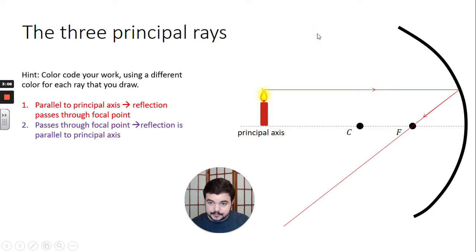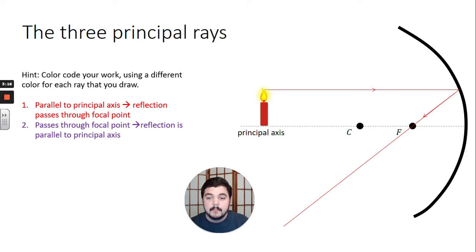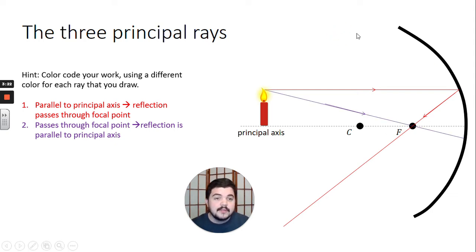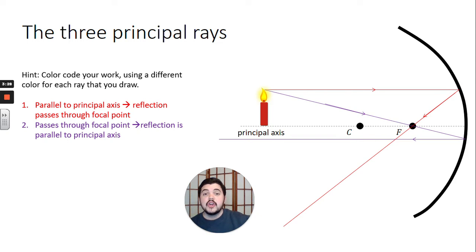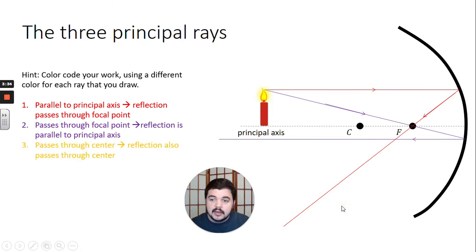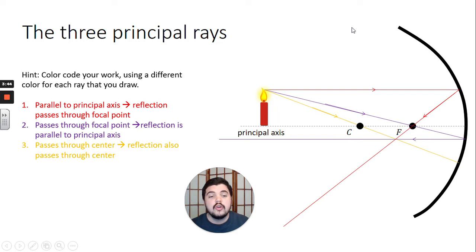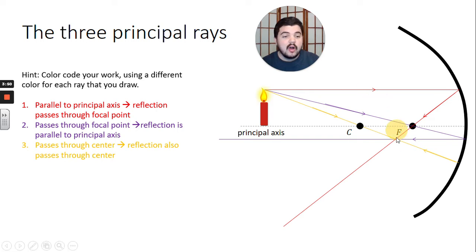Principal ray number two: we can run this geometry in reverse. The light ray that goes through the focal point is going to reflect off of the mirror parallel to the principal axis. I encourage you to use a straight edge — grab a ruler and draw a straight line. Number three: we should draw a light ray that passes through the center of the circle, because that's along the normal line, and since it's along the normal line it's going to reflect back the same way it came.